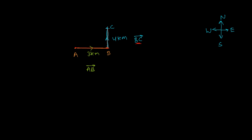Now we want to add these two displacements. If we add them algebraically — without considering the vector signs — then AB plus BC equals three plus four, which is seven. So algebraically, AB plus BC gives us seven kilometers.